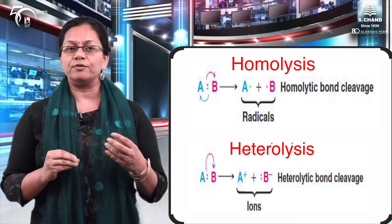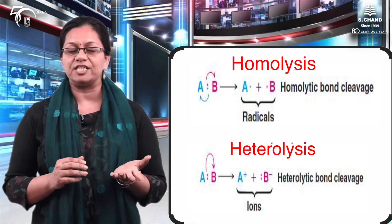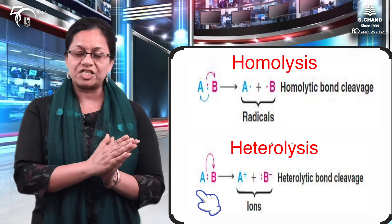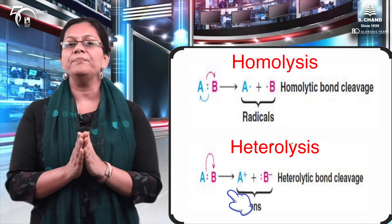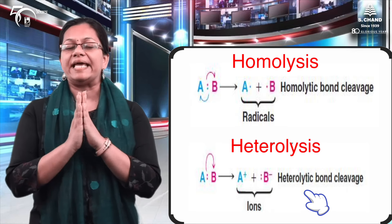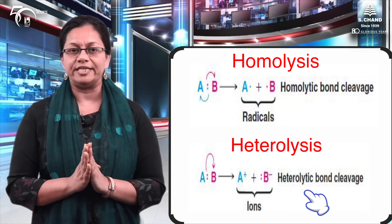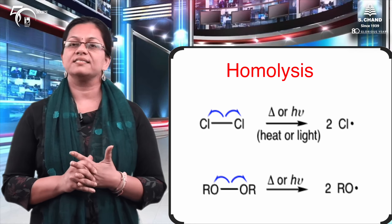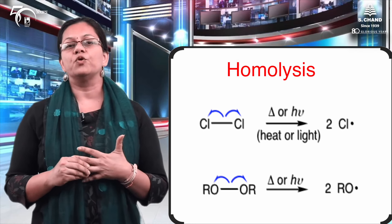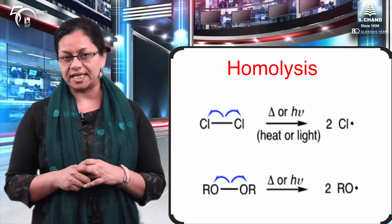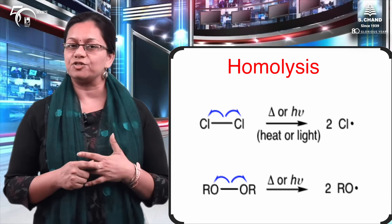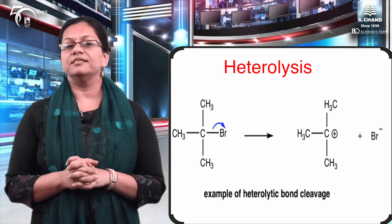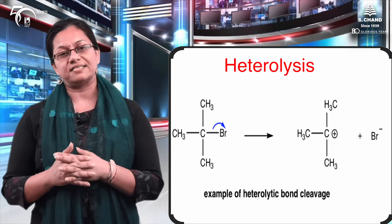In heterolysis, the electron pair goes either completely to A or completely to B — that is heterolytic cleavage. If one electron goes to each atom, it is homolytic cleavage. For example, in the chlorine molecule (Cl₂), each chlorine atom receives one electron and forms a chlorine free radical — that is homolysis. In the case of butyl bromide as an example of heterolysis, the butyl group gets a positive charge and the bromide takes away both electrons.